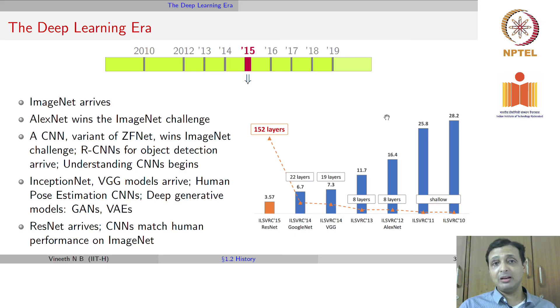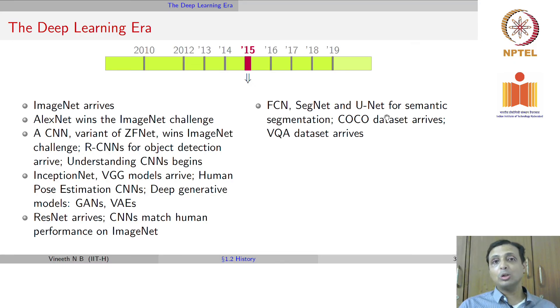In 2015, residual networks or ResNet arrived and CNNs matched human performance on ImageNet. It was a landmark achievement. 2015 also saw segmentation networks that came into the picture. Fully convolutional networks, SegNet and U-Net were all developed in 2015 for the task of semantic segmentation or labeling every pixel in an image with a particular class label. The COCO dataset also started appearing at that time, and the first visual question answering dataset, the VQA dataset, was developed in 2015.